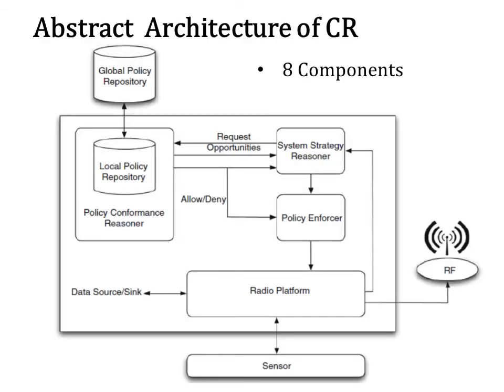The abstract architecture of cognitive radio comprises eight basic components. They are: sensors, radio platform, radio frequency, policy enforcer, system strategy reasoner, policy conformance reasoner, local policy repository, and global policy repository. We will see each of these components in detail in the forthcoming slides.